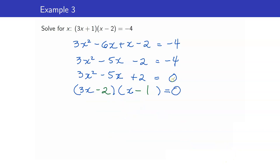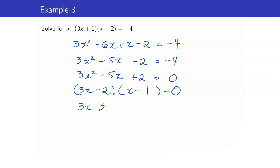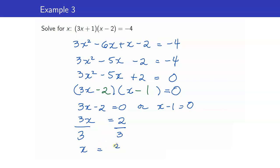Setting it equal to zero, we now set each factor to zero: 3x minus 2 equals zero, or x minus 1 equals zero. Solving: from 3x equals 2, dividing both sides by 3, we get x equals two-thirds. From the other factor, x equals 1. These two are your solutions.